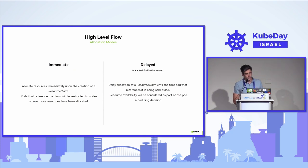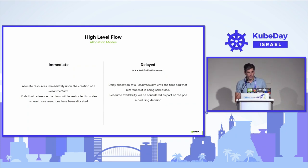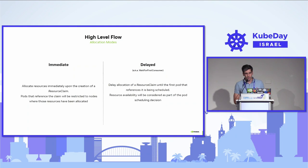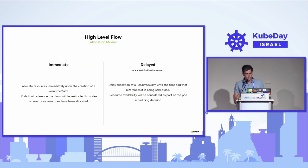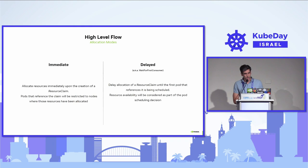There are two allocation modes. Immediate allocation means allocation happens right when the resource claim is created — the resource driver allocates it on a specific node, and the pod referencing this claim gets scheduled onto that node. Delayed allocation, also known as wait for first consumer, delays allocation until a pod references the claim. At that point, resource availability is considered as part of pod scheduling — the entirety of the pod's requests including CPUs, device plugins, and other claims are all taken into consideration in the scheduling decision.